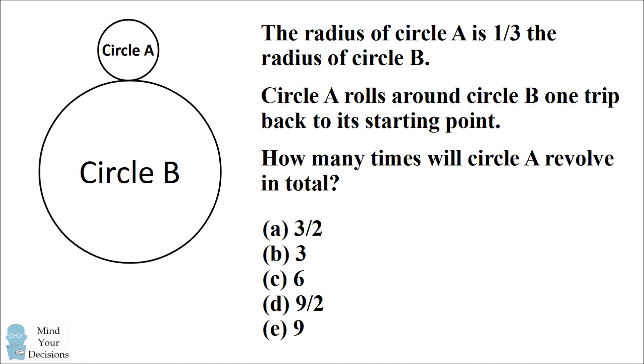Remember this was on the SAT so it's a timed exam and students would have had to figure it out just using pencil and paper. Here is what the test preparers thought when they made the question. If circle A rolls around a distance of three times its circumference, if you do it very carefully, you'll find that circle A will roll around three times in total. And that's what they thought the correct answer should be.